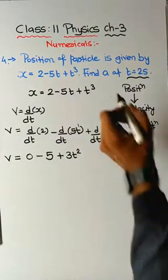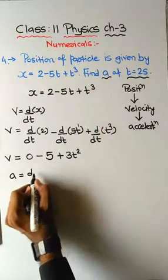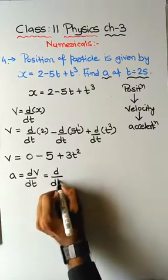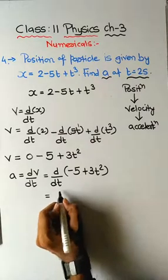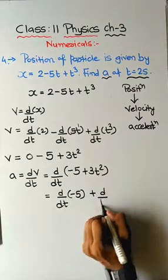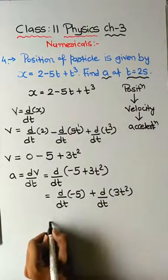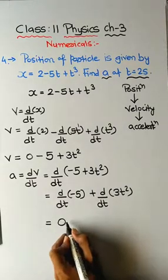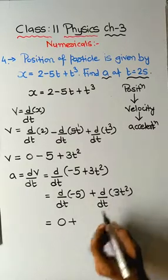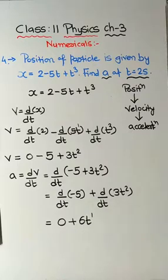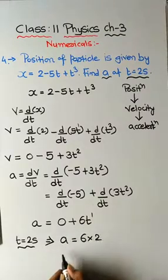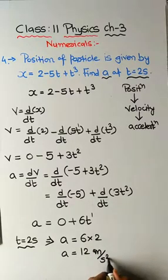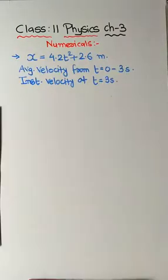We need acceleration, so compute dv/dt of (-5 + 3t²). d/dt(-5) = 0, and d/dt(3t²) = 6t. So acceleration = 6t. Now substituting t = 2 seconds: a = 6 × 2 = 12 m/s².